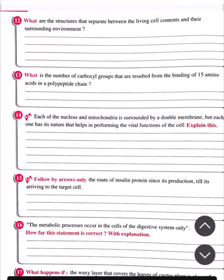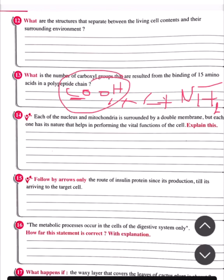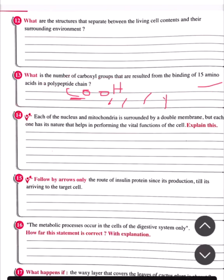Question number 13: What is the number of free carboxyl groups resulting from the binding of 15 amino acids in a polypeptide chain? When amino acids form a polypeptide chain through peptide bonds, the amino groups and carboxyl groups are consumed in bonding. Only one free carboxyl group remains at the end of the polypeptide chain. Therefore, the free carboxyl group is one, regardless of the number of amino acids.